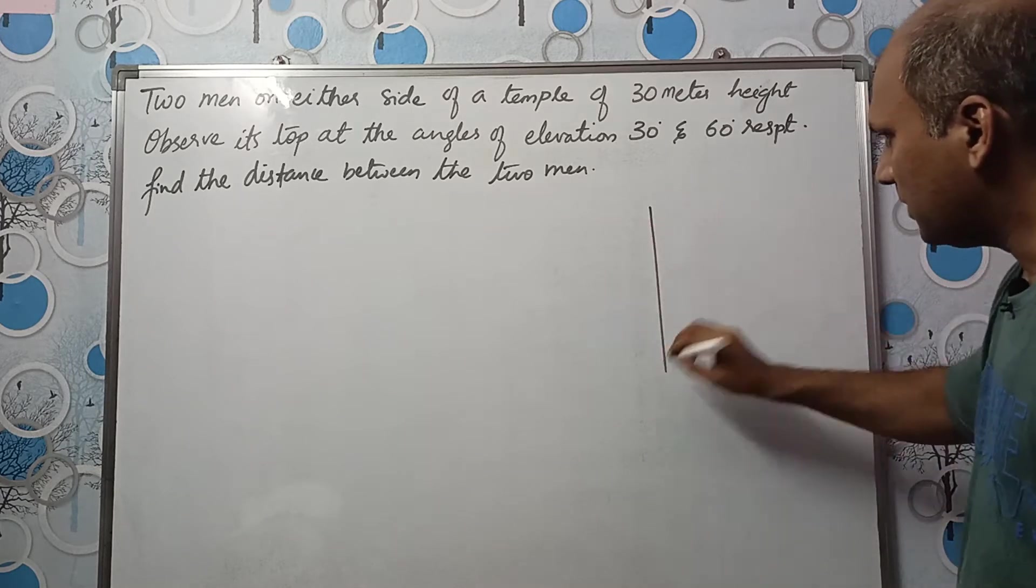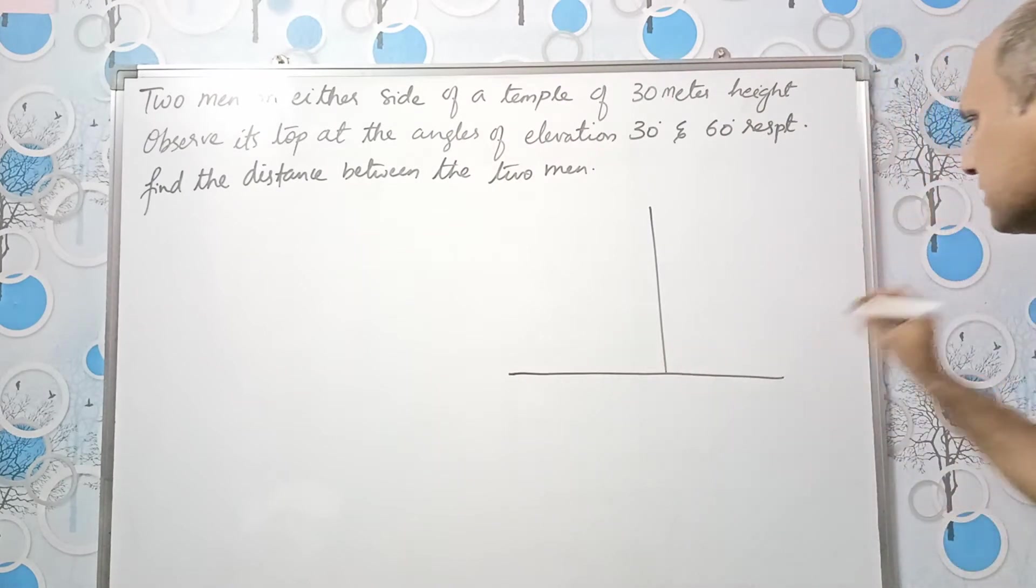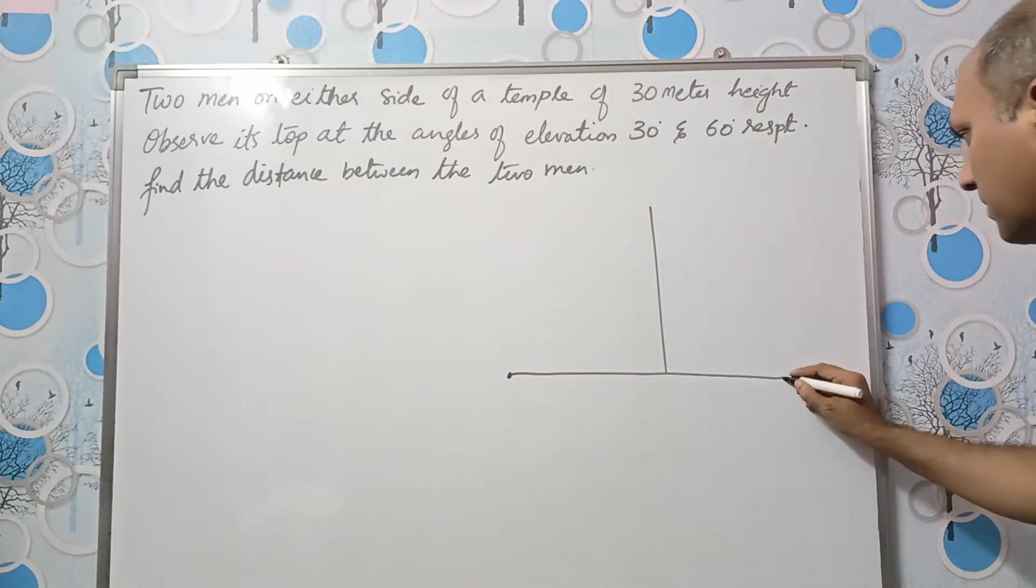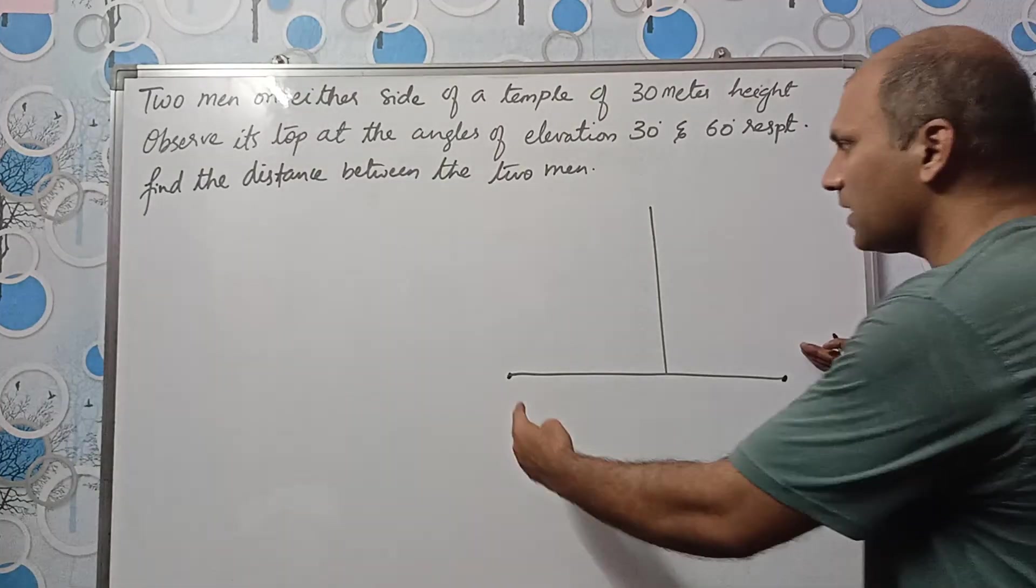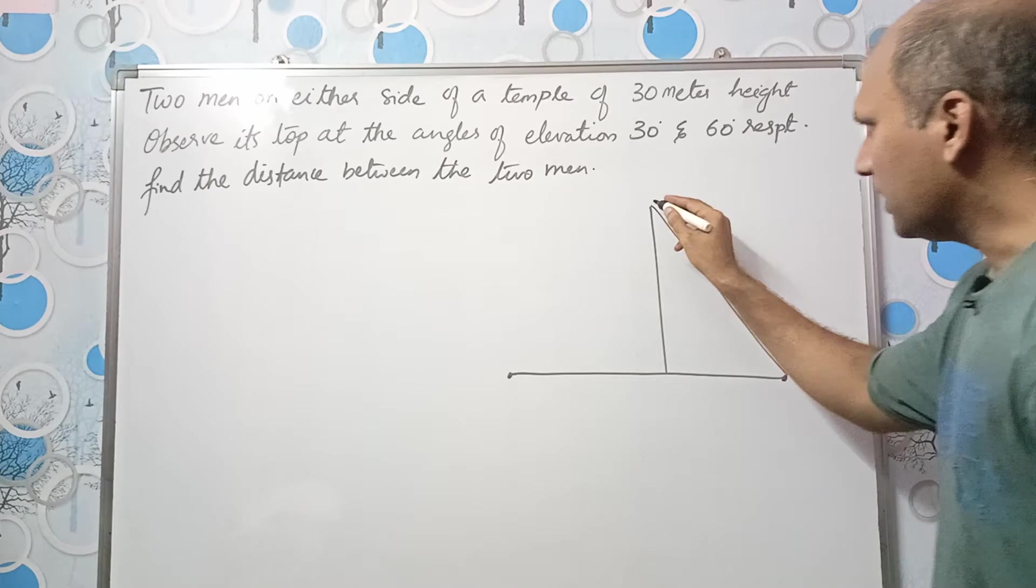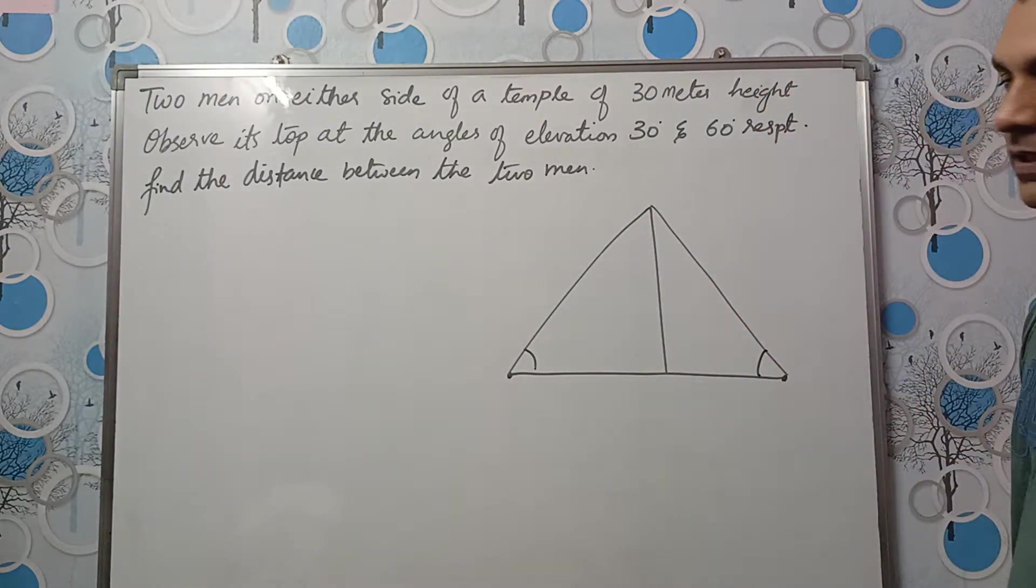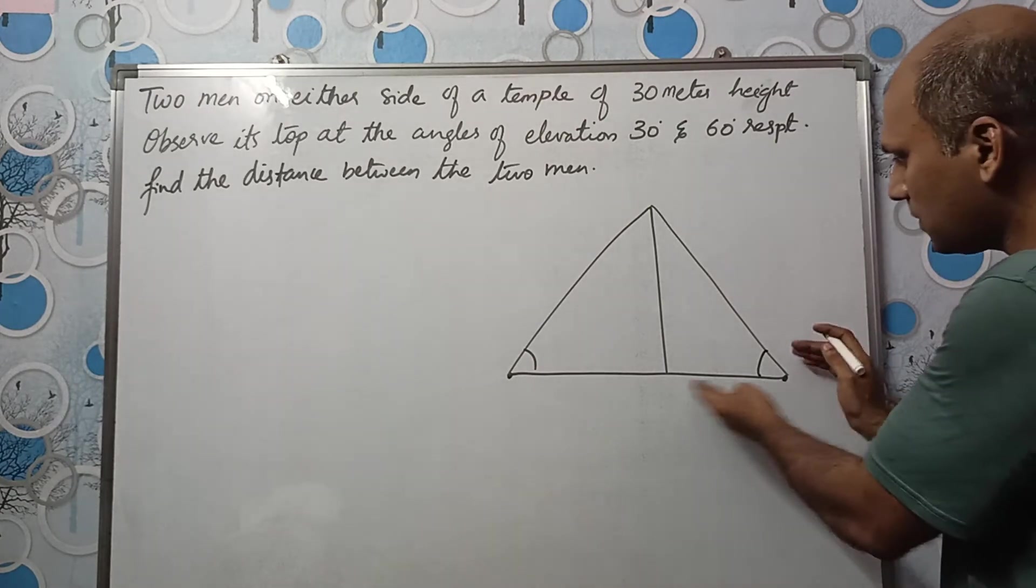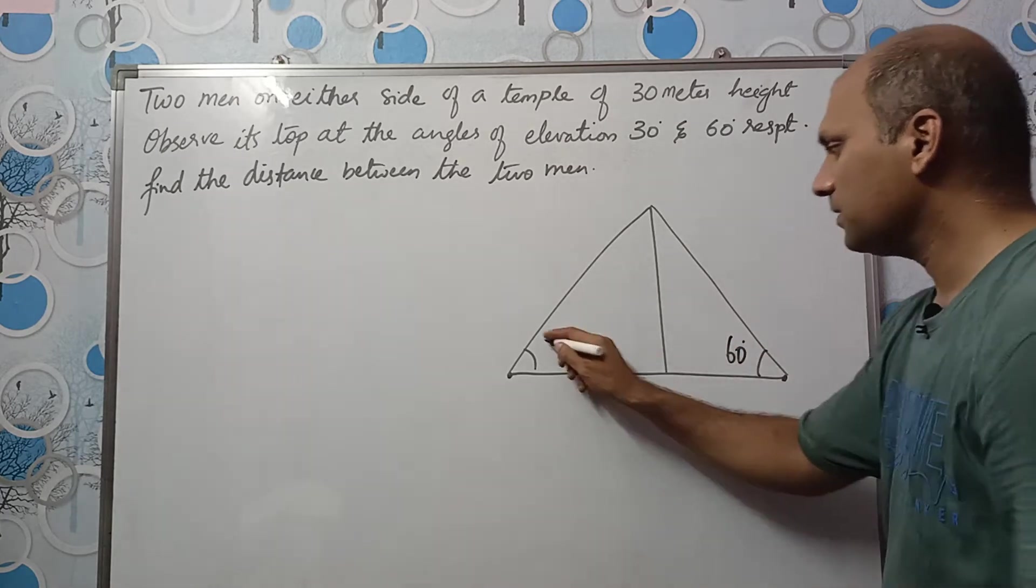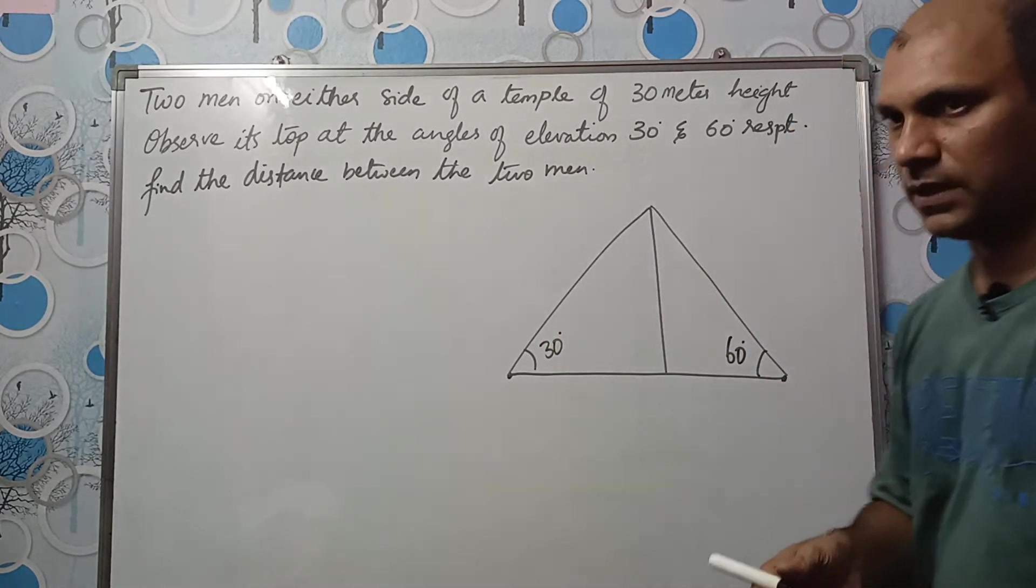See there is a temple, suppose this is the temple. Two men are on either side of this temple. Let us say one man is here and the other man is here and these two men are observing the top of the temple. One is making angle 60 degrees and the other is making angle 30 degrees. This man is closer to the temple so the angle will be more here. Let us take 60 here, let us take 30 here. This is just a rough diagram.